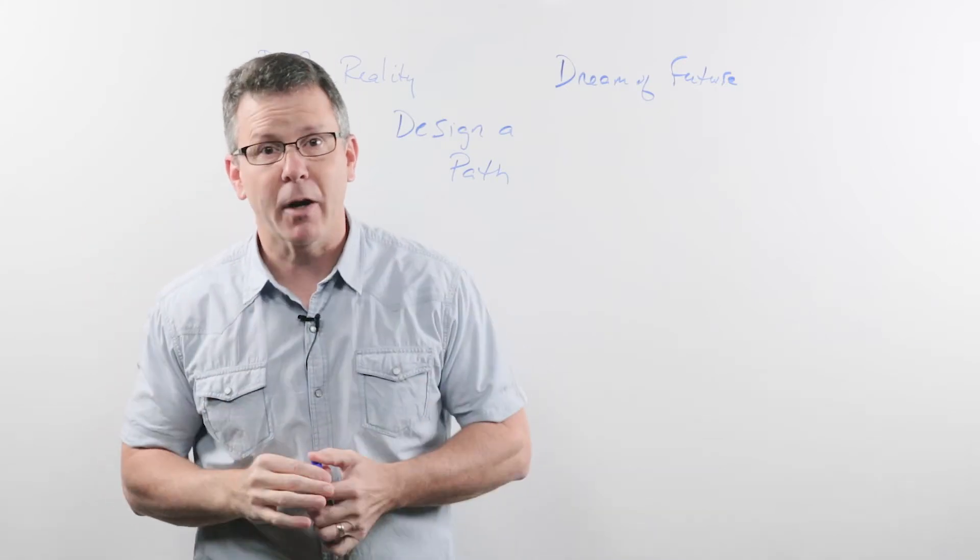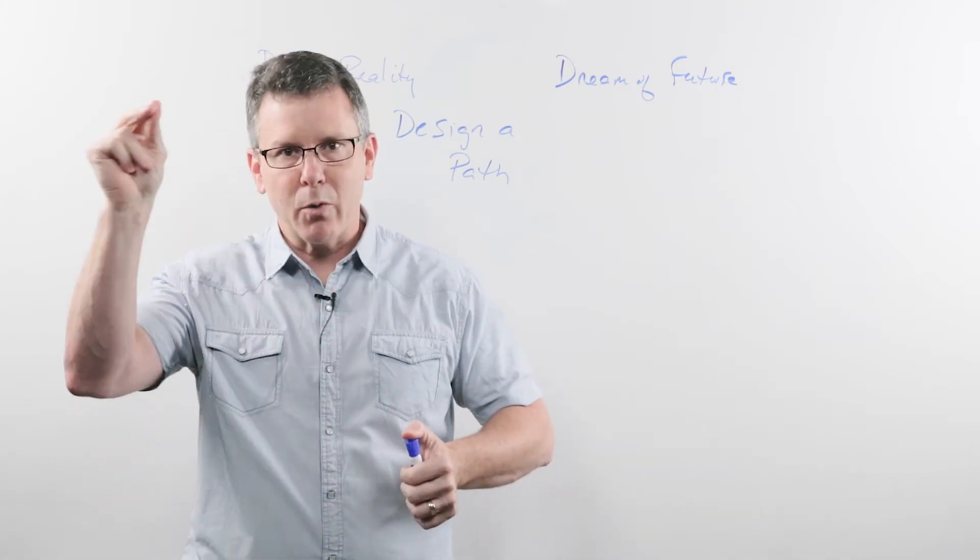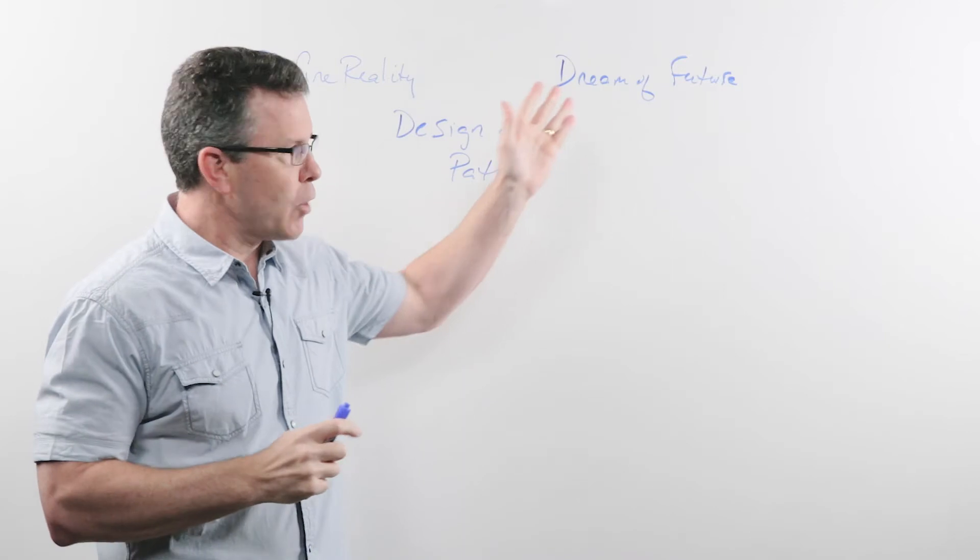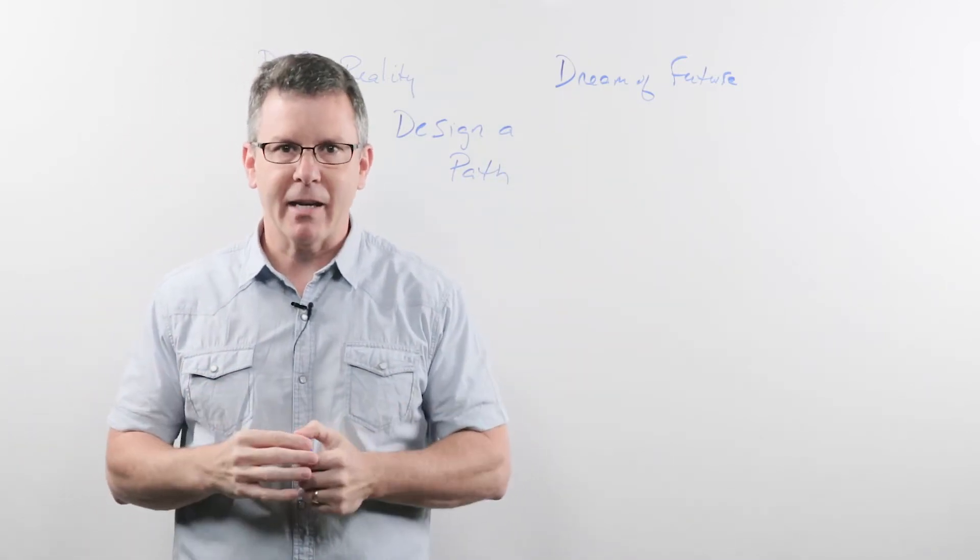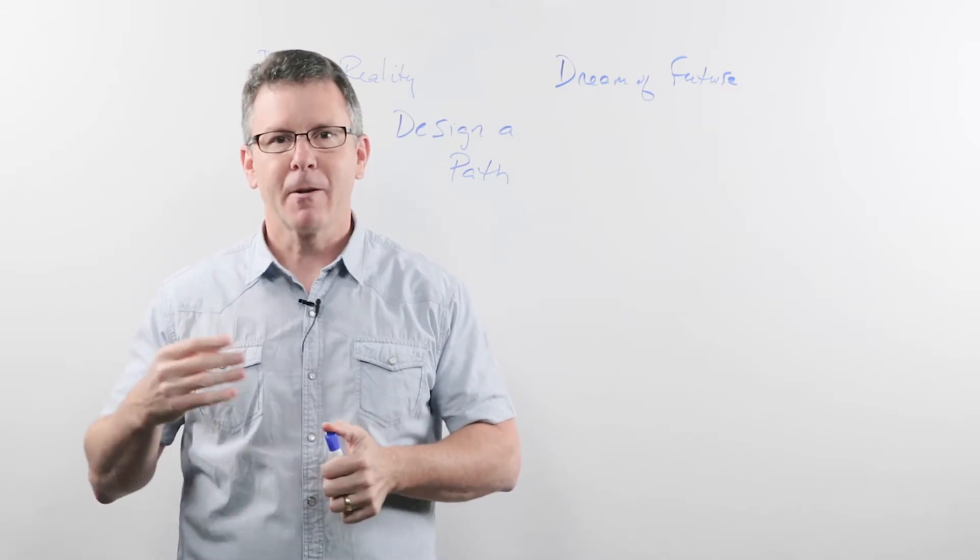You have to make sure it goes past the food court because you're hungry, right? So you walk through those things: define reality, dream of the future, and design a path. You're probably great at one, adequate at the second, and you need help with the third.